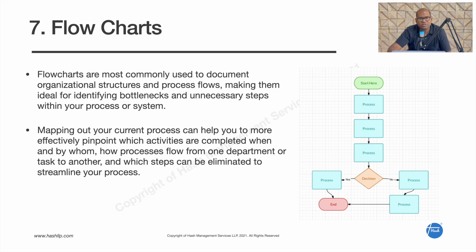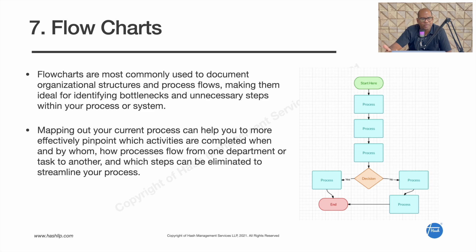The seventh tool is the flowchart. Flowcharts are mostly used for documenting results, showing progress, showing organization structures, and depicting process flow, making it easy for the audience to understand. Mapping the current process helps you pinpoint which activities are completed and by whom, and how the process flows from one department to another. This is the seventh and final tool of the 7 QC tools.